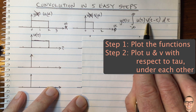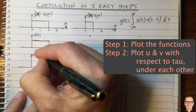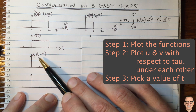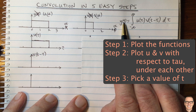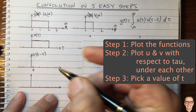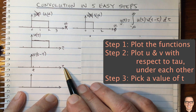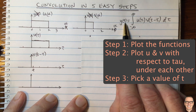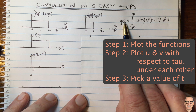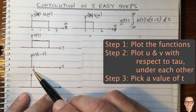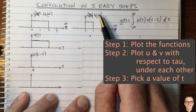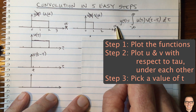Now we need to plot underneath it v of t minus tau. This is where step three comes in: we need to do this for a particular value of t. Let's pick a small positive value of t. Don't forget we're plotting with respect to tau — we're picking a value of t and doing the convolution for that value. To plot this function, I use a technique where I think about the thing in the brackets. It was important to have changed the variable to alpha earlier, just to make that point.